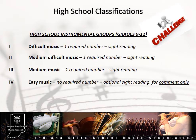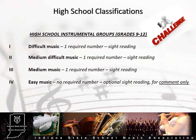In the high school classification, you may also encounter bands, string orchestras, and full orchestras. Students in these ensembles will be in grades 9 through 12. There are four group levels in the high school classification. Groups 1, 2, and 3 have required music lists, while Group 4 has a suggested list.